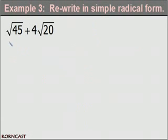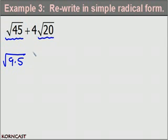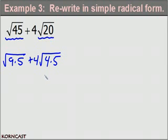In example three, we need to add two radicals. Since the radicals are not the same, we cannot add them directly — we must simplify first. The biggest perfect square in 45 is 9, so √45 becomes √(9×5). For the second term, the biggest perfect square in 20 is 4, so 4√20 becomes 4×√(4×5).